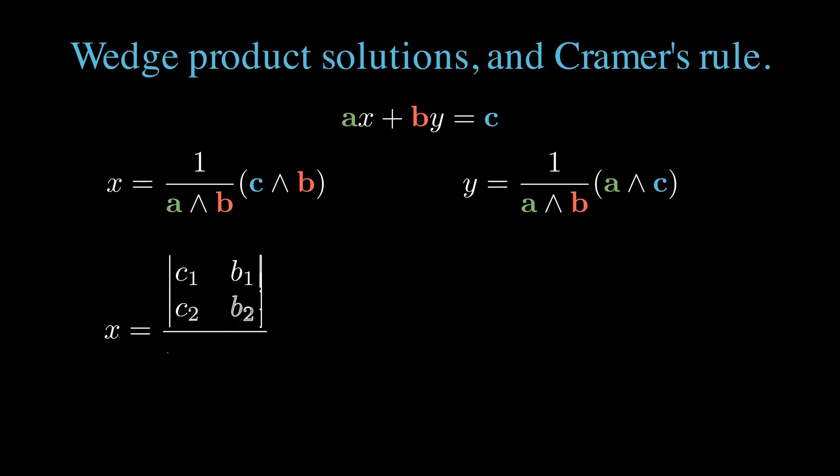Substituting that into our expressions for x and y, we're left with, having cancelled our unit bivectors e1, e2, a ratio of determinants.